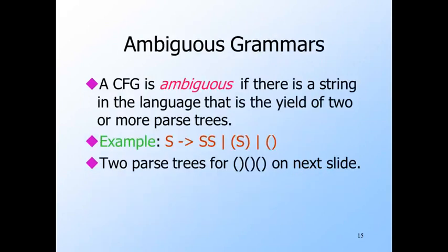As we mentioned at the beginning, it is important in many applications — including parsing of programming languages in a compiler and parsing of natural language sentences — that we use a context-free grammar assigning a unique parse tree to each string of the language. We say a grammar is ambiguous if there is at least one string in its language that has two different parse trees; otherwise it is unambiguous. The grammar for balanced parentheses is ambiguous. I'll show you two parse trees for the string left, right, left, right, left, right.